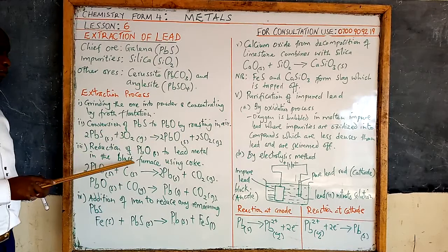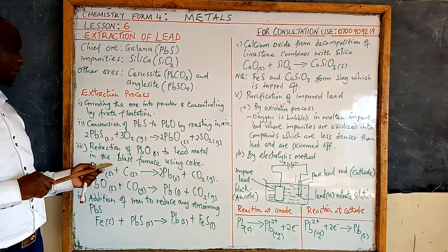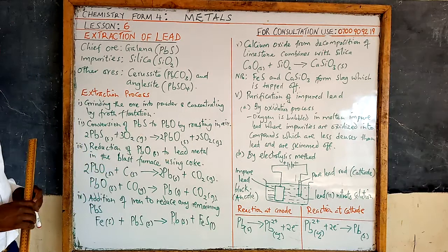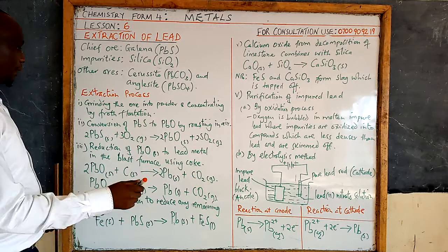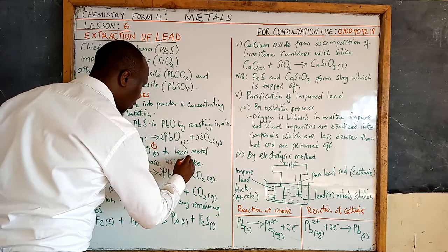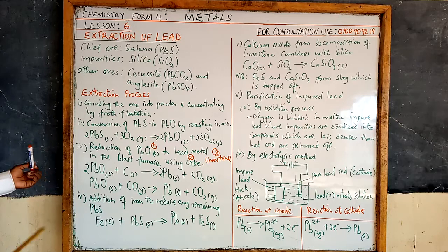Step three is reduction of lead oxide to lead metal in the blast furnace. If you have not watched lesson 4, please review it — you will see the blast furnace where we have the extraction of iron. The raw materials placed in the blast furnace are lead oxide, coke, and limestone.